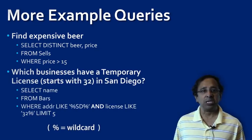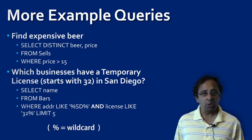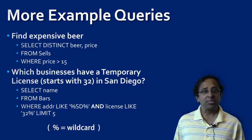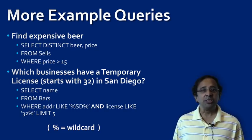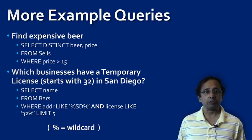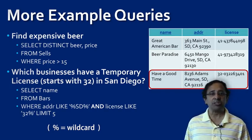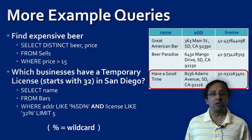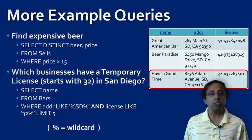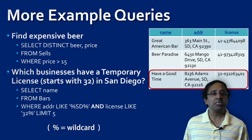The second example shows the case where more than one condition must be specified. In this query, the business must be in San Diego and, at the same time, it must be a temporary license holder, which means the license number should start with 32. These conditions are put together by the AND operator. Thus, the query will pick the third record in the table because the first two records satisfy the first condition but not the second. One can also place a limit on the number of results to return. If our database is large and we need only five results — for example, for a sample to display — we can say LIMIT 5. The exact syntax of this LIMIT clause may vary between DBMS vendors.